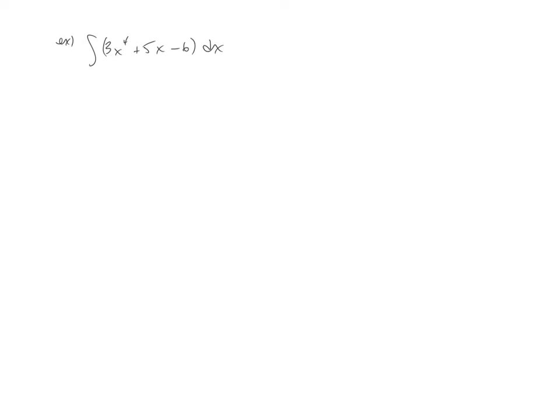Okay, so in this video we're going to take a look at some basic examples of finding these antiderivatives or integrating these functions. Remember the rule is always to add one and divide. From the last video we saw our properties. By our properties we can pull constants outside of integrals, and we can also distribute across pluses and minuses. So in theory, this is also the same thing as 3 times the integral of x to the 4th dx plus 5 integral x dx minus 6 integral dx.